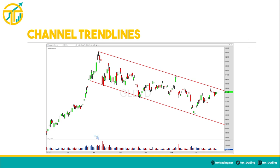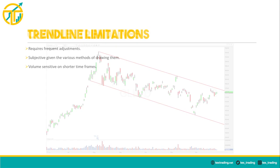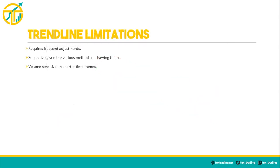A complex trend line is usually drawn on longer time frames where price sliced through it before interacting with it again at a later date. In this example you can see a trend line acting as resistance since 2008; price sliced through it in early 2020 before reclaiming and holding it as support later in the year. Trend lines can also be used to observe channels — an area where price appears contained between two trend lines. While trend lines are very useful, they do have limitations. The subjective nature in which they can be drawn makes them more difficult to use, and trend lines applied on shorter time frames can be volume sensitive.